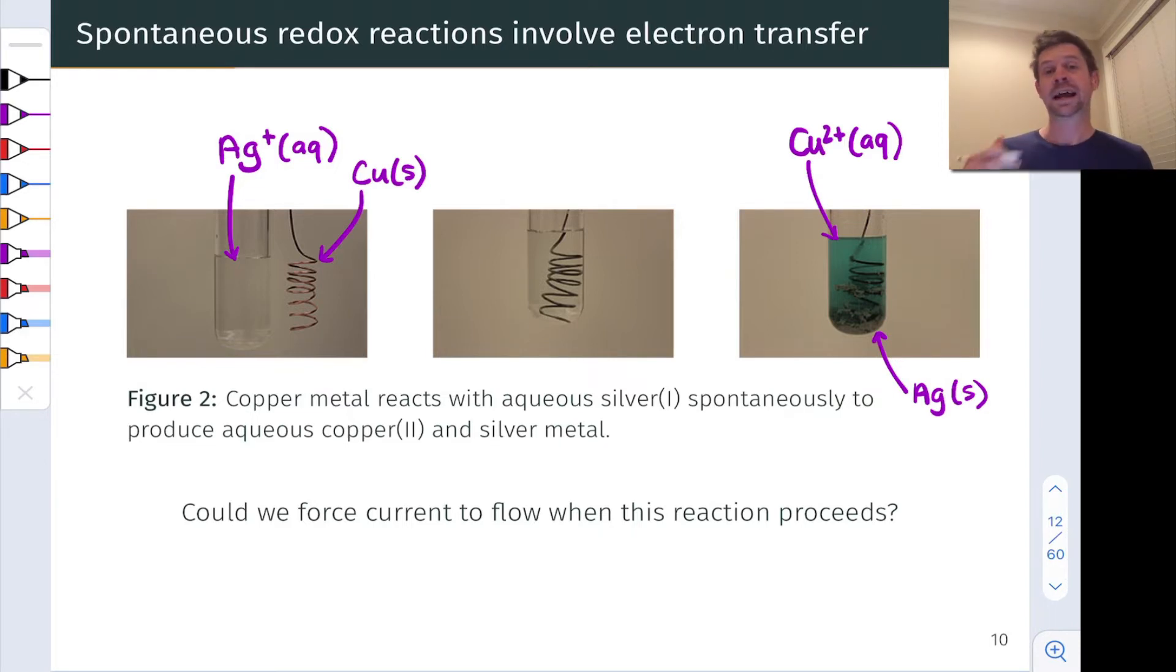The answer is yes. Galvanic cells are designed to force current to flow through a wire in order for a spontaneous redox reaction to take place. The driving force for that electron flow is the free energy change built into the fact that copper wants to transfer its electrons to silver plus to produce copper two plus and silver metal.